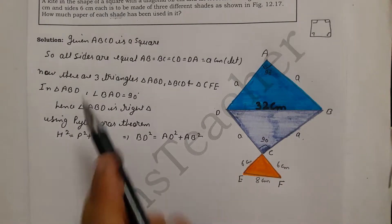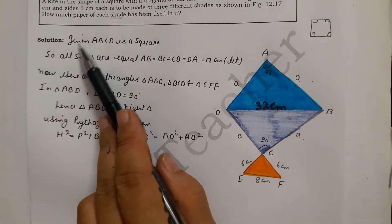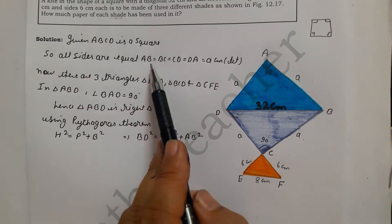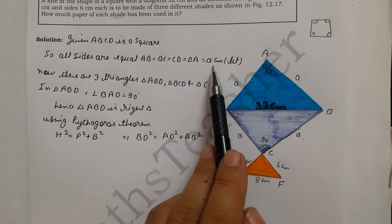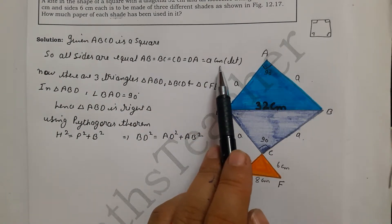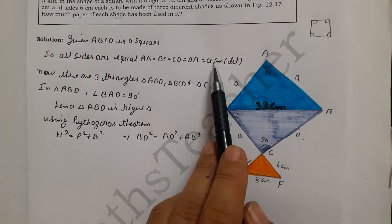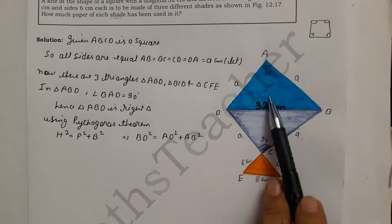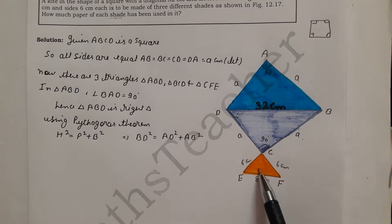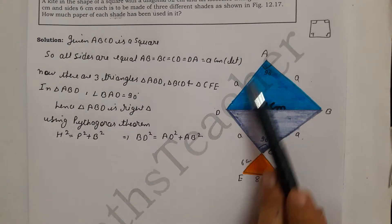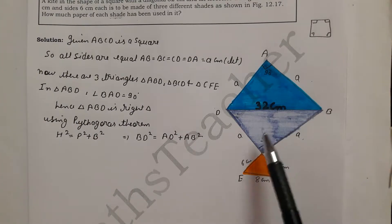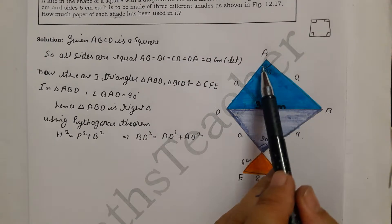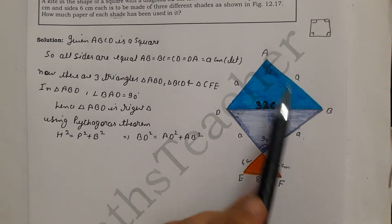Since ABCD is a square, all sides are equal: AB = BC = CD = DA = a cm. We take the variable 'a' for the side length. There are 3 triangles in the figure. In triangle ABD, the angle at B is 90 degrees, so we apply the Pythagorean theorem.